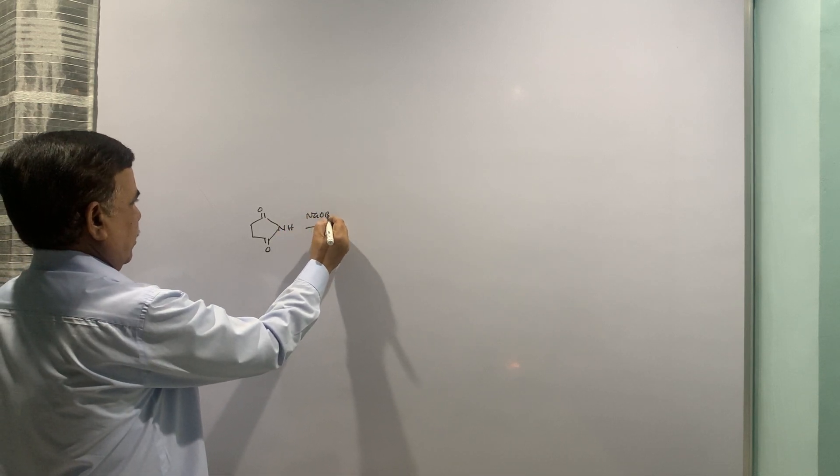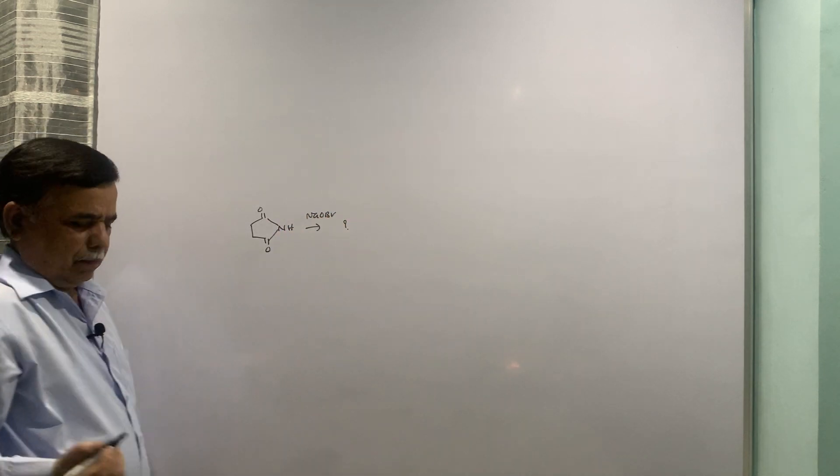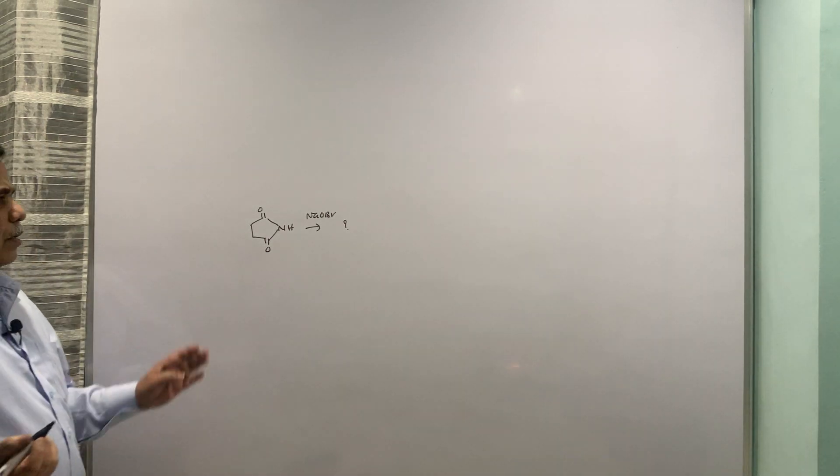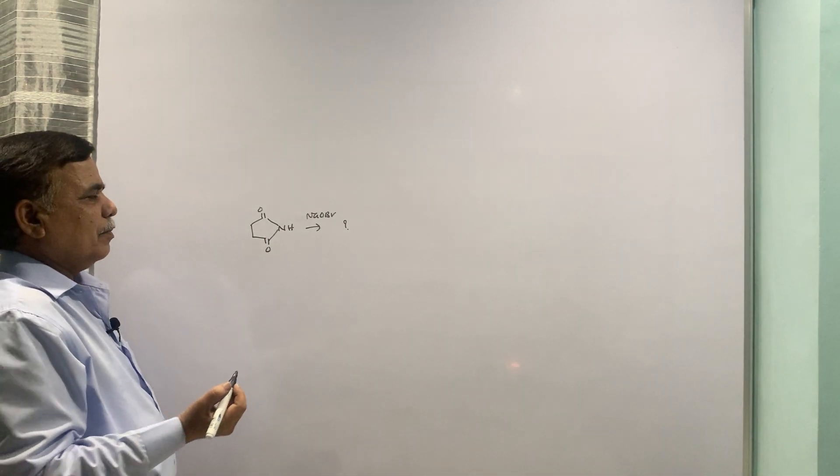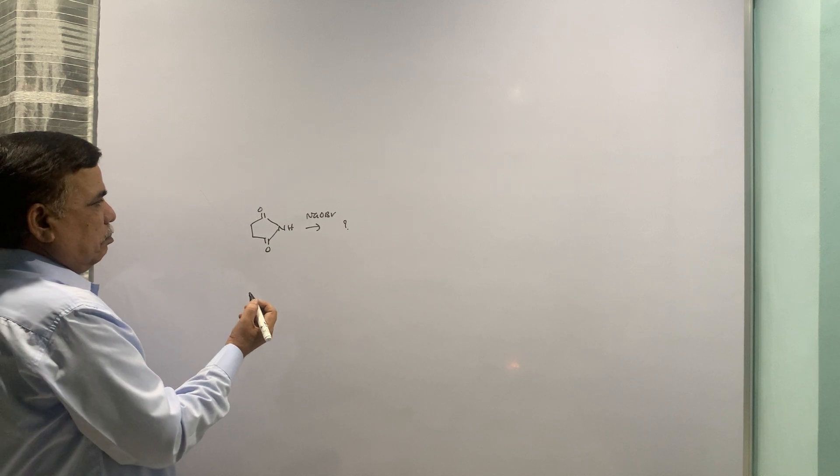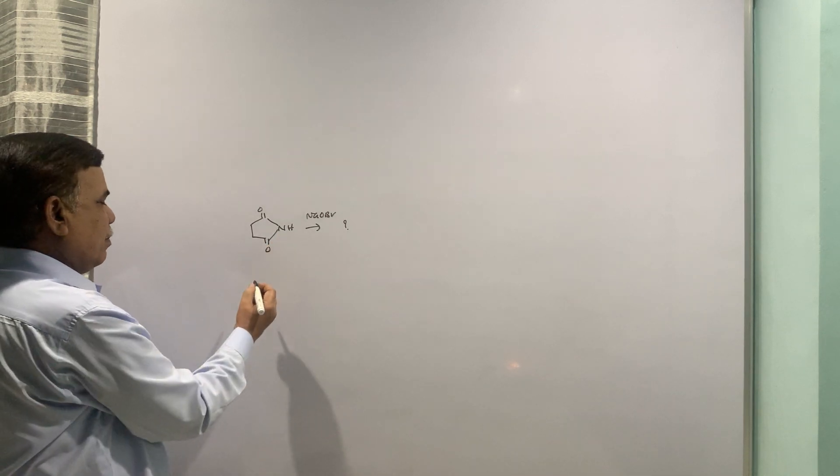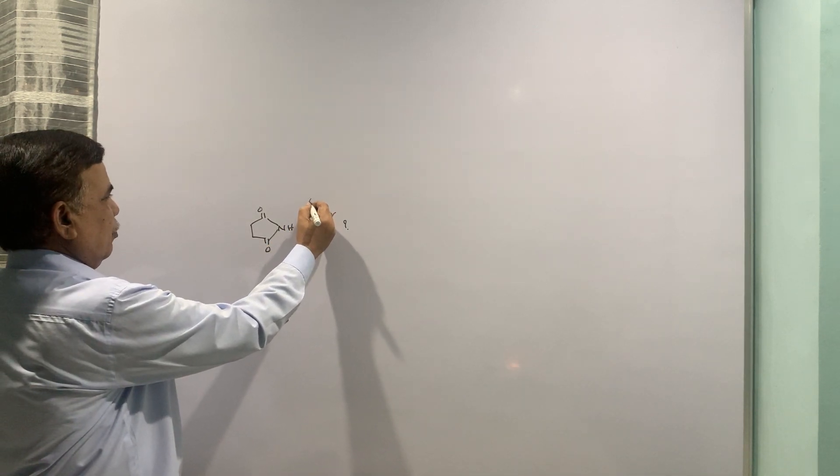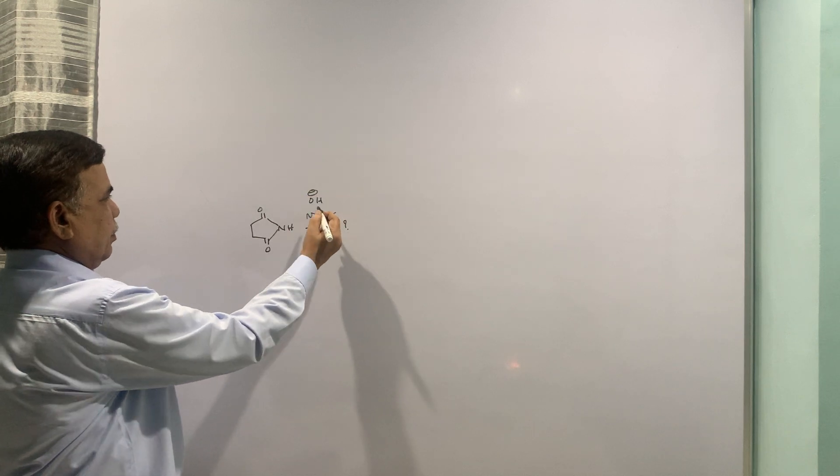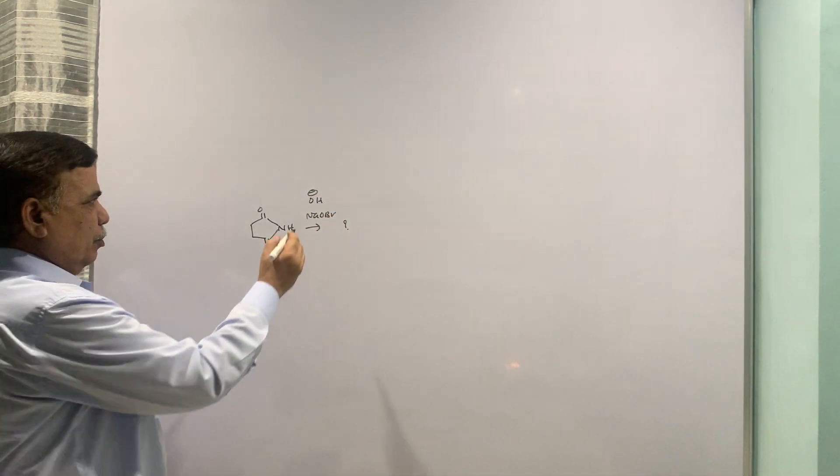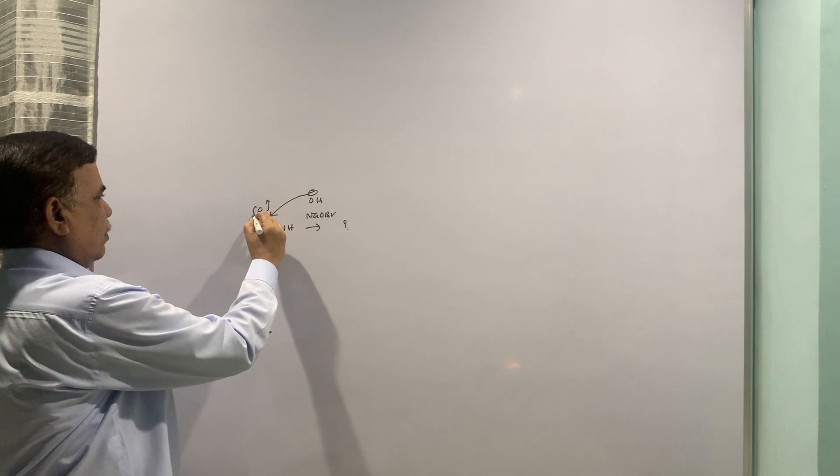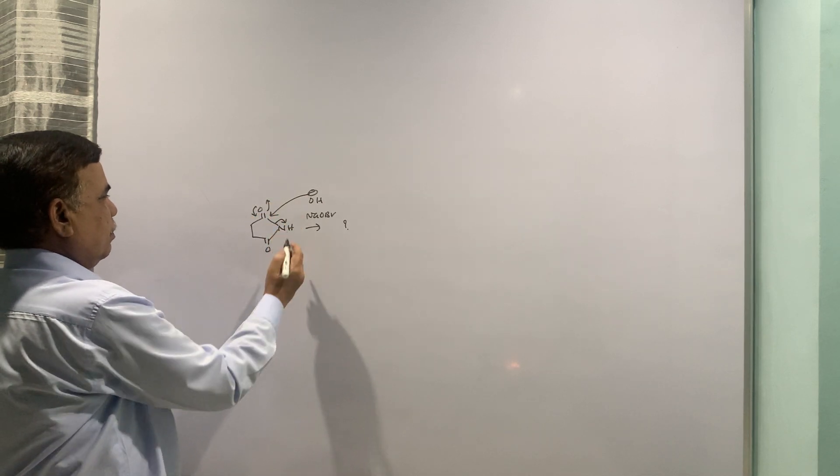NaOBr. Here this is your classical Hofmann degradation because this is amide. NaOBr is prepared from NaOH and bromine. So this goes off. This opens up. What you have, you have got ONa and CONH2.